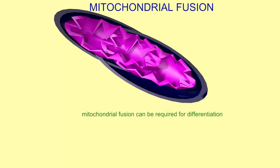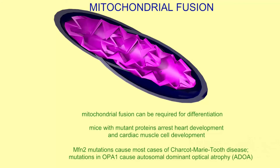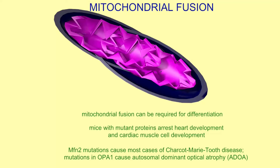Mitochondrial fusion is important. It may be required in order for cells to leave a quiescent state and in order to differentiate. For example, in mice, mutant mitofusin proteins stop heart development and the development of cardiac muscle cells. There are diseases associated with mutations in the genes which function in mitochondrial fusion.